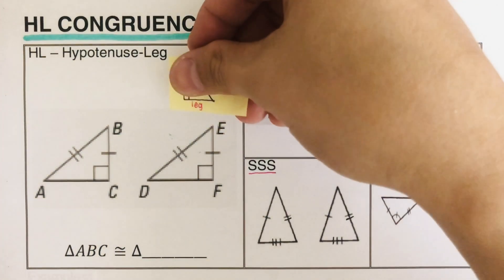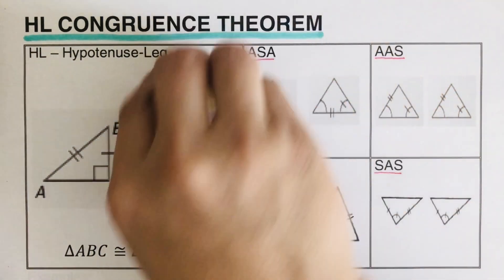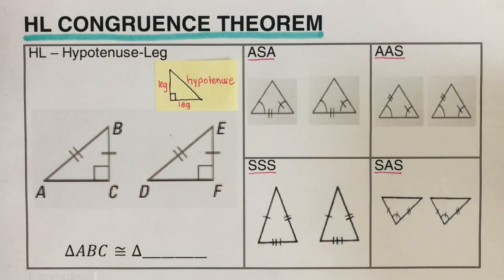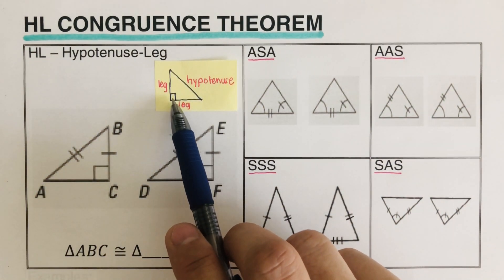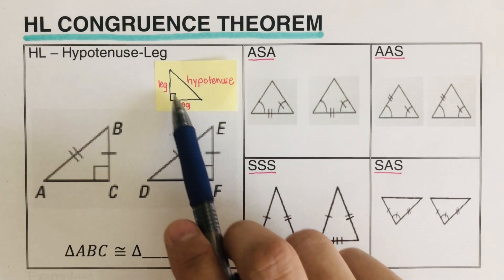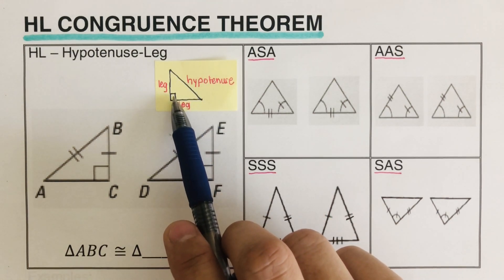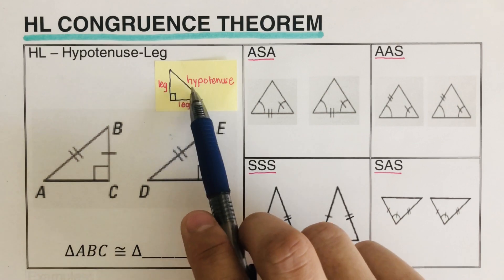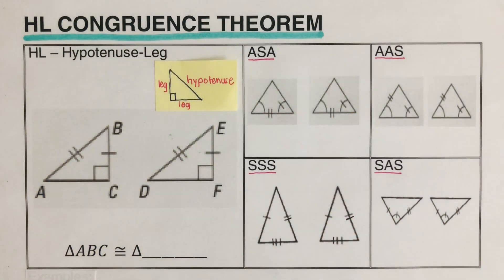So let's go over the parts of a right triangle first before we move on. Please remember there are two parts: the legs are the ones connected to the right angle, and then opposite across from the small square is the hypotenuse, which is the longest side in the triangle.